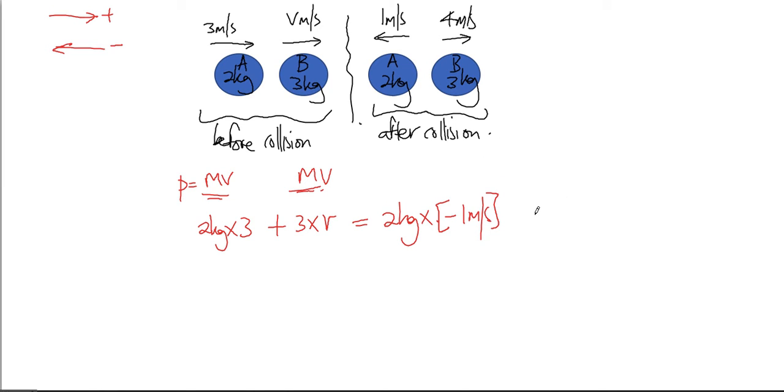And then plus 4 meters per second multiplied by 3. We don't have to change direction because it's moving towards right, so the sign doesn't change.